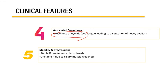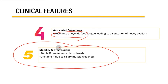There may also be associated heaviness of the eyelids due to eye fatigue. Regarding stability, if the accommodative insufficiency is due to lenticular sclerosis or cataract, the symptoms will be stable. However, if it is due to ciliary muscle weakness from systemic causes like fever or illness, the symptoms will be variable and depend on the status of the ciliary muscle.